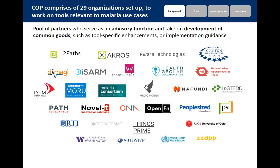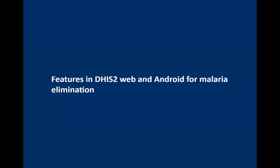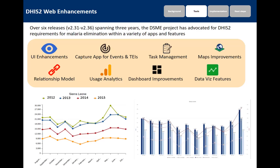There's a community of practice where we have regular meetings and share experiences and lessons learned. I also want to focus on some of the features added into DHIS2 web and Android specifically around the malaria elimination use case. Over six releases — from version 2.31 to 2.36, so over the last three years — this DSME project has advocated for DHIS2 requirements for malaria elimination within a variety of apps and features, including user interface enhancements, the new capture app for events and tracker programs, task management around working lists and user assignment, and improvements within analytics apps including maps, user analytics, and data visualization.